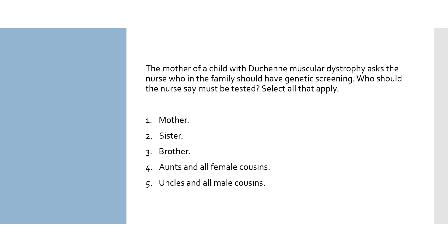Number one: mother — Duchenne muscular dystrophy is inherited as an X-linked recessive trait, meaning the defect is on the X chromosome; women carry the disease and males are affected, so the mother should have genetic testing. Number two: sister — she should also have genetic testing since females carry the disease, to determine her risk of having male offspring with this disease. Number three: brother — only female relatives need to be genetically tested. Number four: aunts and all female cousins — all female relatives should be tested to see if they are carriers. Number five: uncles and all male cousins — only female relatives need to be genetically tested. Numbers one, two, and four are our answers; only females need to be genetically tested for this disease.